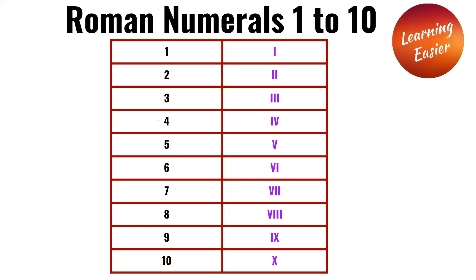Roman numerals 1 to 10: 1 is I, 2 is II, 3 is III, 4 is IV, 5 is V, 6 is VI, 7 is VII, 8 is VIII, 9 is IX, 10 is X.